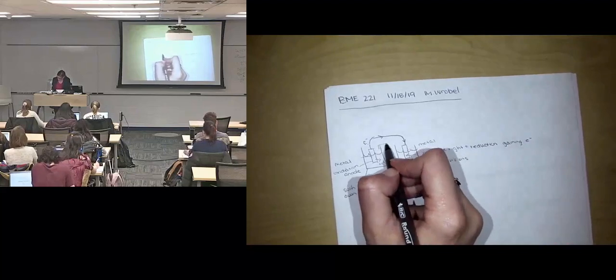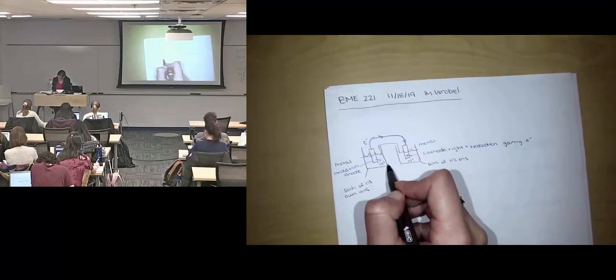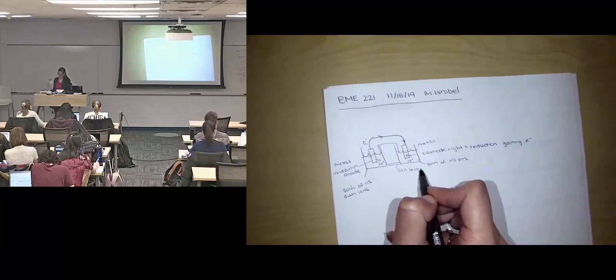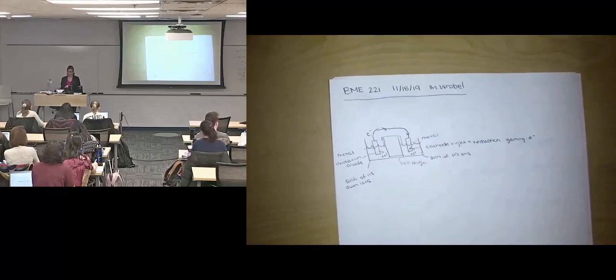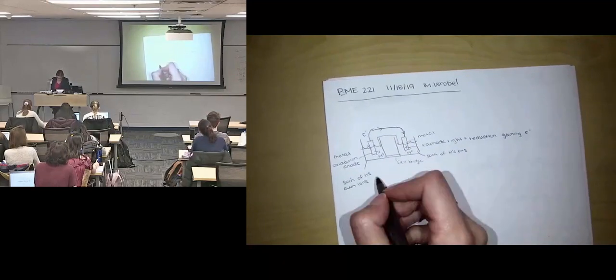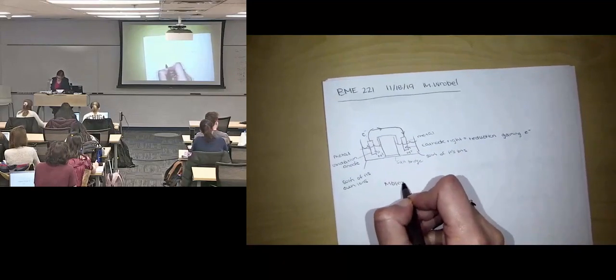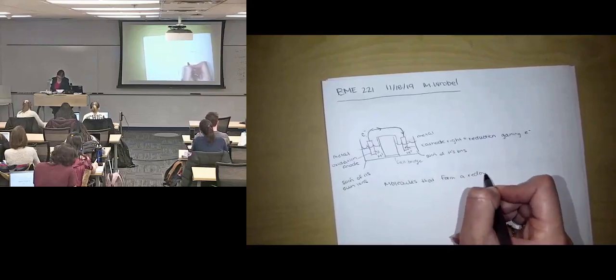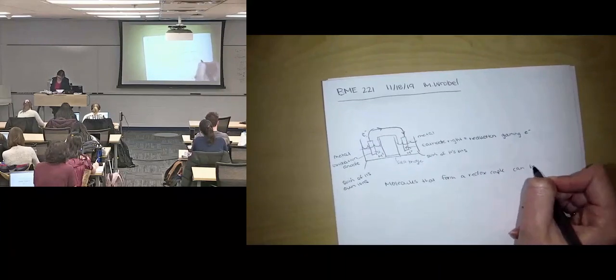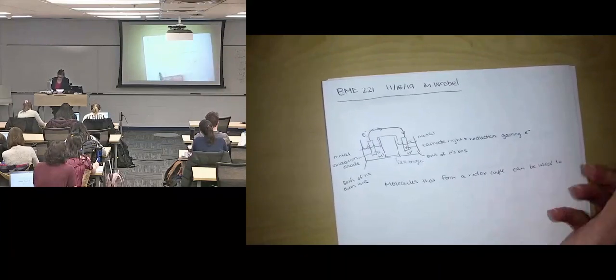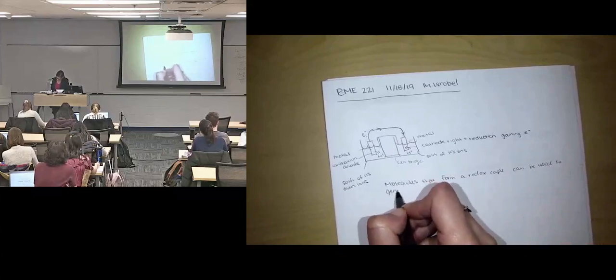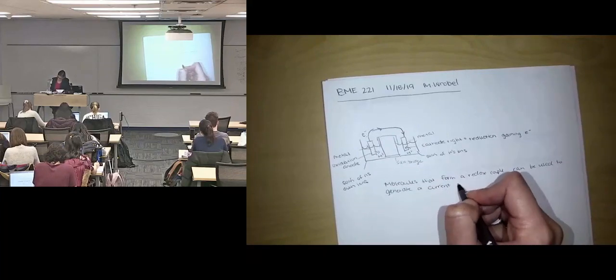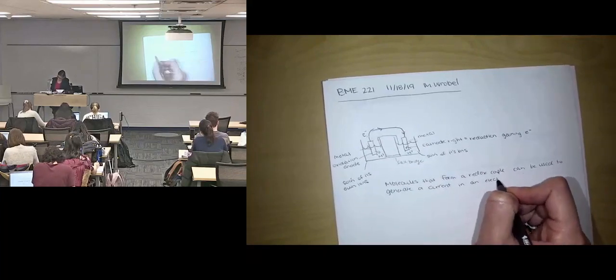What is the only thing missing from my drawing to complete this cell? A salt bridge. So either something that looks like this or maybe some connection down at the bottom. We need some salt bridge so our other ions can flow, and we don't have a buildup of charge. So basically, molecules that form a redox couple can be used to generate a current in an electrical circuit, which is essentially what's being built here.